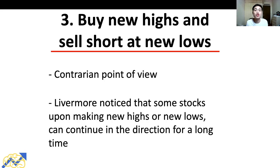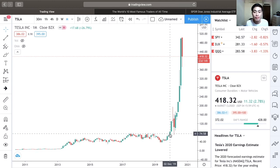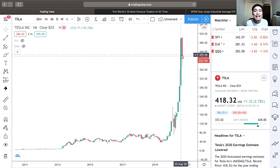Jesse Livermore's third rule is to buy at new highs and sell short at new lows. This sounds counterintuitive because the media has drummed into us the idea of buying stocks at a discount — buy low, sell high. But Livermore noticed that some stocks upon making new highs or new lows can continue in that direction for a long period of time. The Tesla price chart illustrates this: back in December 2019, Tesla made a new high at around $75. Some traders may have sold or even shorted Tesla then, but Tesla continued making new highs and has increased by more than sevenfold since that December 2019 high.